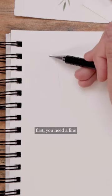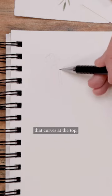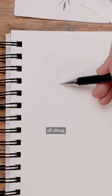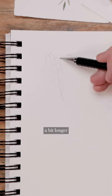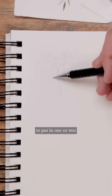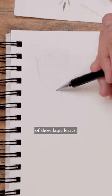Starting in pencil, we'll draw one blossom. First you need a line that curves at the top, and then you just draw these little circles all along it. Maybe make it a bit longer and then do another one, and then you're going to put in one or two of those large leaves.